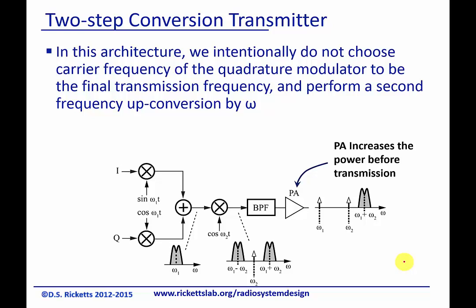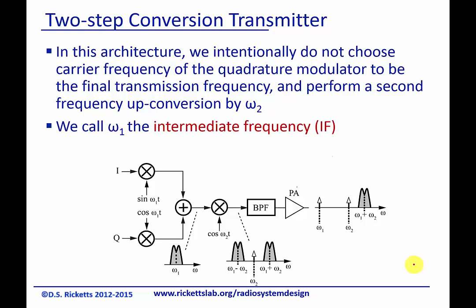And once again, we would need some sort of PA at the output to increase the power for transmission. As you've seen all along, we call omega-1 the intermediate frequency, or IF. It's always going to be referred to as IF. Omega-1 will be the difference or the offset of the signal from our final RF carrier. Omega-2 is what we would call the RF carrier, and omega-1 really sets this offset.